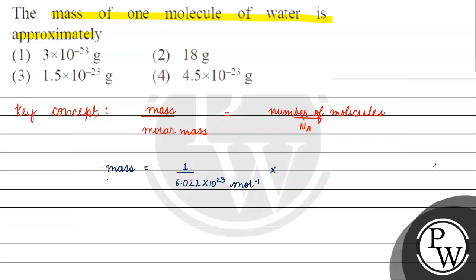The molecular mass of water: hydrogen has atomic weight 1 gram per mole, multiplied by 2 gives 2, and oxygen is 16 gram per mole. So the total molecular mass of water is 18 gram per mole.